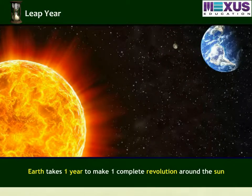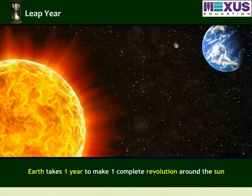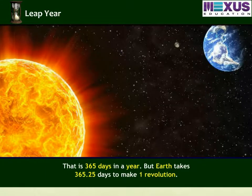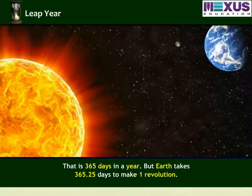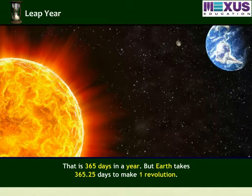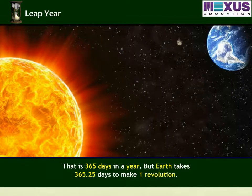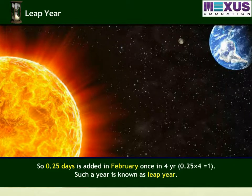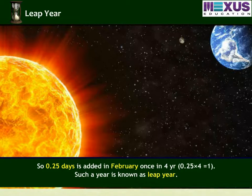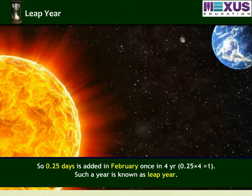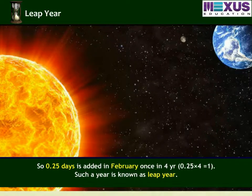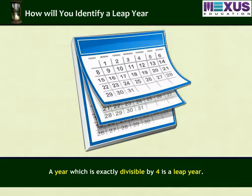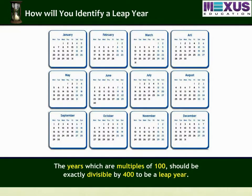We know that the earth takes one year to make one complete revolution around the sun, that is 365 days in a year. But the fact is, the earth takes 365.25 days to make one revolution. So this extra 0.25 days is added in February once in 4 years. Such a year is known as a leap year. A year which is exactly divisible by 4 is a leap year, but years which are multiples of 100 should be exactly divisible by 400 to be a leap year.